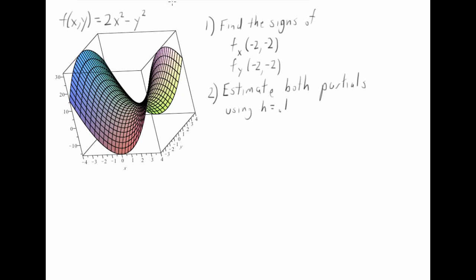Alright, well let's orient ourselves on the graph a little bit. So roughly speaking, we are somewhere around here. So -2x, -2y. And we're thinking about what happens as we move first in the x direction and then in the y direction.